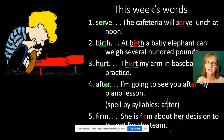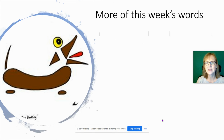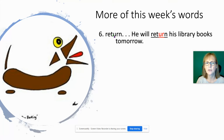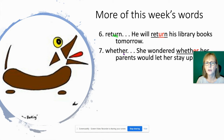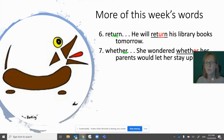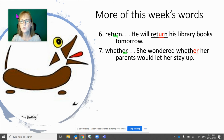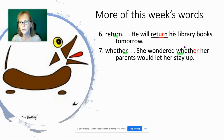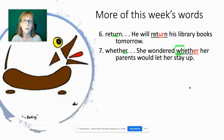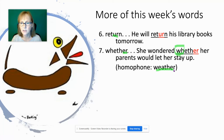A good way to remember the E-R spelling is that you already know how to spell 'her'. Next, 'return' — 'He will return his library books tomorrow' — E-R. Then 'whether' — 'She wondered whether her parents would let her stay up' — this is a question word like 'what', 'where', 'when', 'which', all starting with W-H. It has a homophone: 'weather', still with E-R at the end but E-A in the middle.